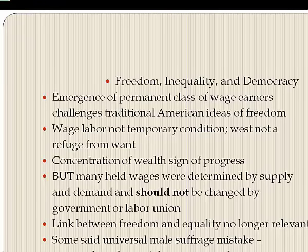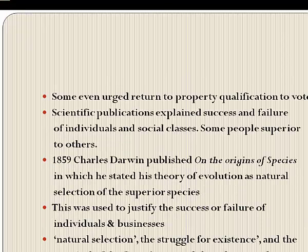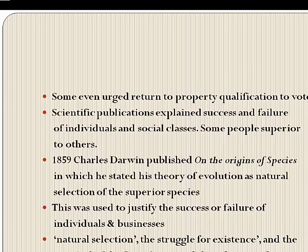The link between freedom and equality forged in the Revolution and strengthened by the Civil War no longer seemed relevant. Reformers challenged Grant in the 1872 elections and even argued that universal male suffrage was a mistake, as the poor and workers might use the vote to threaten property. They urged a return to property qualifications for the vote. The idea that some groups were superior to others — once used to rationalize slavery — now reappeared in scientific guise to explain the success and failure of individuals and entire social classes.